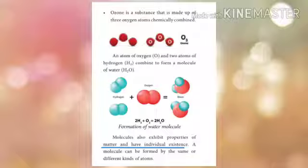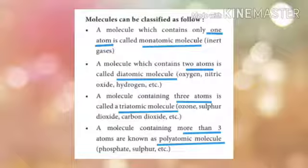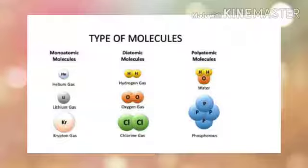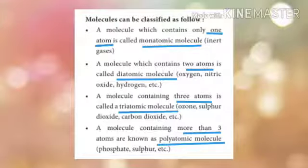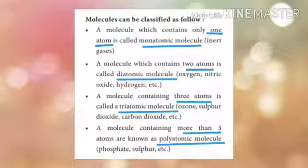Molecules also exhibit properties of matter and have individual existence. A molecule can be formed by the same or different kinds of atoms. Molecules are classified as follows: a molecule which contains only one atom is called a monoatomic molecule; two atoms is called a diatomic molecule; three atoms is called a triatomic molecule — for example ozone, sulfur dioxide, carbon dioxide.